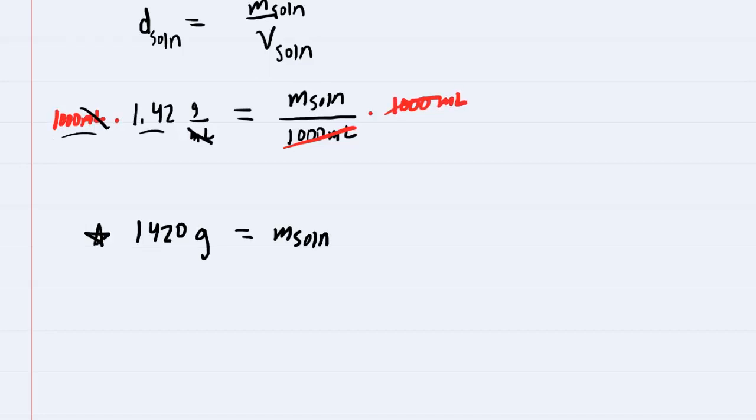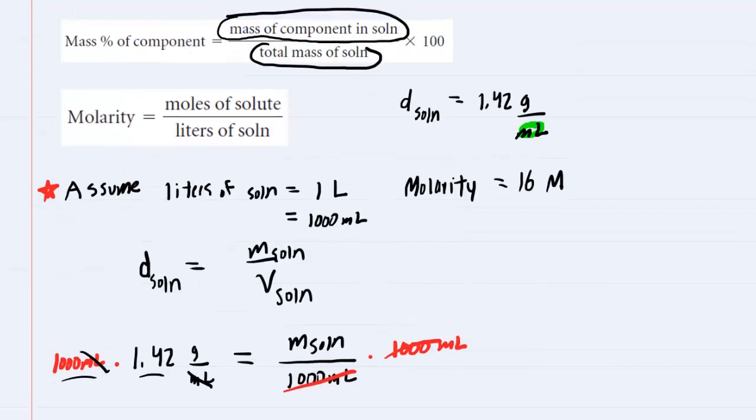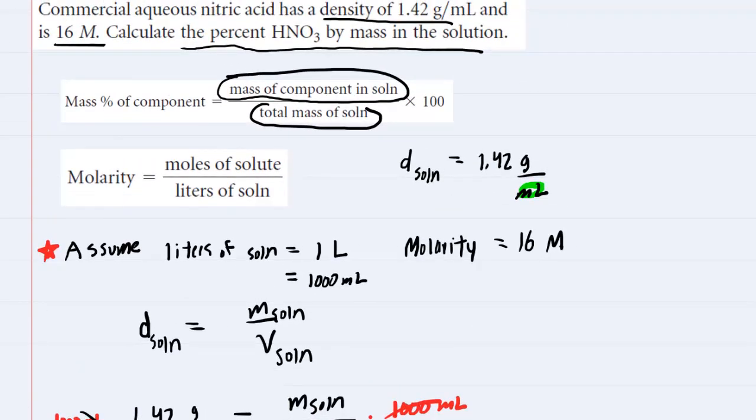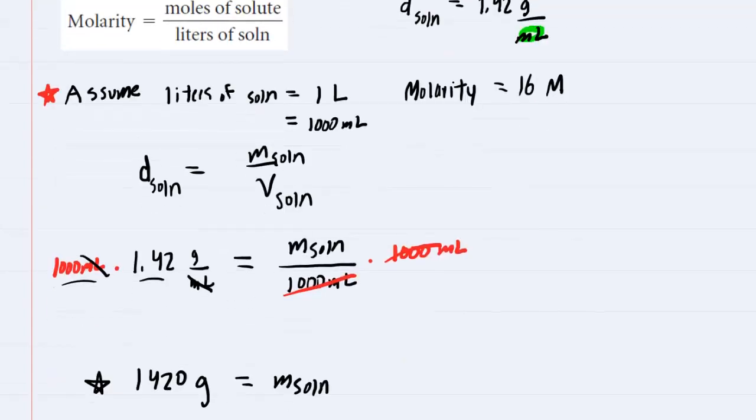Now this is a key value that we need, because if you go back up to the percent by mass formula, one of the things we needed was the total mass of the solution. And we now have that. It's 1,420 grams. So we're halfway there.